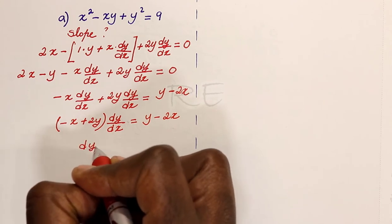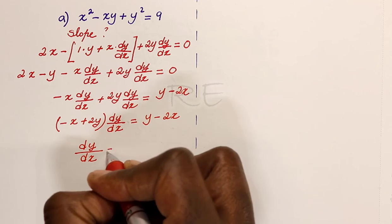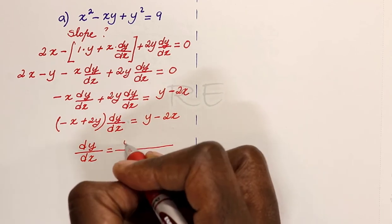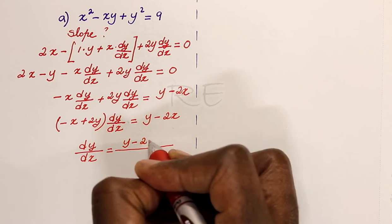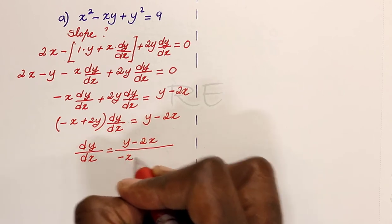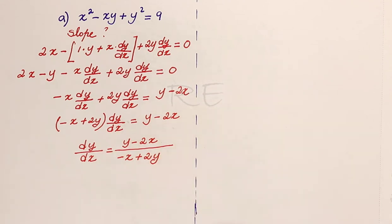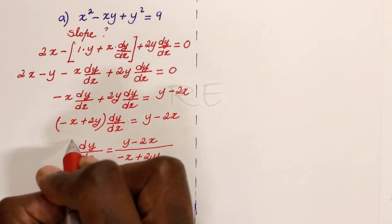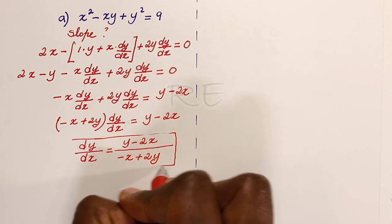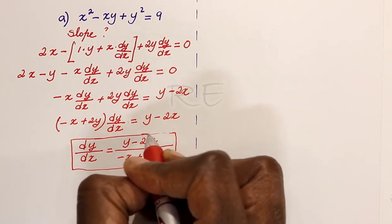To find dy dx, we're going to divide both sides by negative x plus 2y. So dy dx is equal to y minus 2x divided by negative x plus 2y. And this is the general expression of the slope.